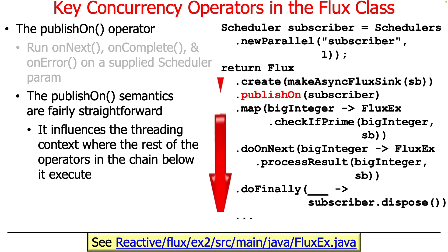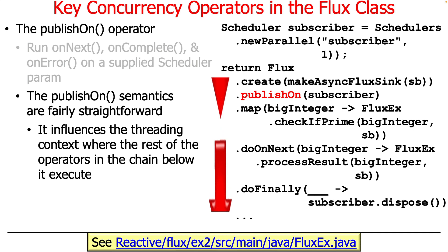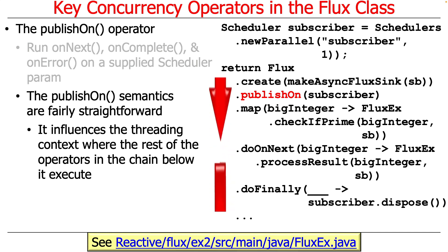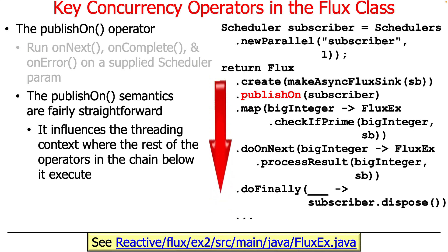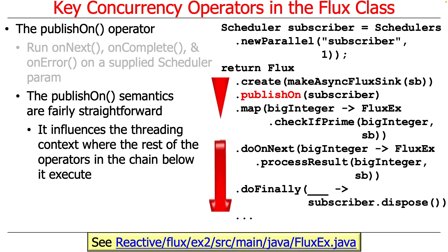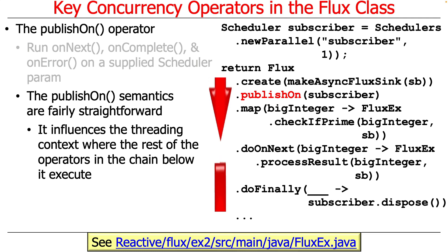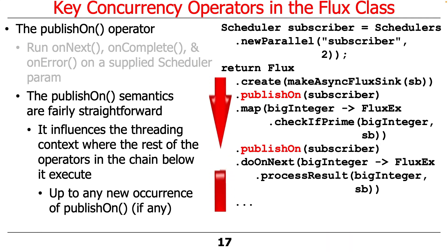In this case we create another new parallel scheduler which we call subscriber, so we're going to have some things run in a publisher context — made by the create method we'll talk about shortly — and then everything after publishOn will run in a different thread. So we're going to have a publisher thread and a subscriber thread as two different threads. This is a bit more coherent and sensible than subscribeOn.